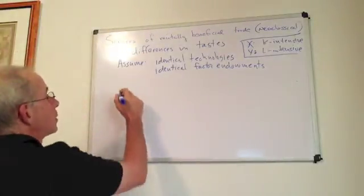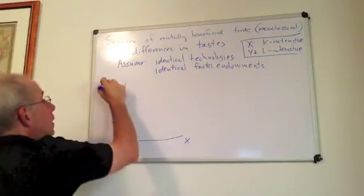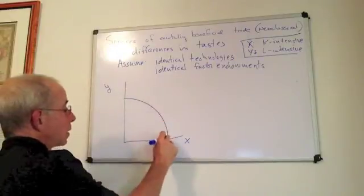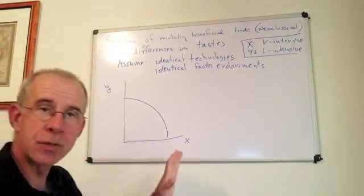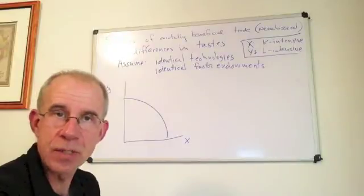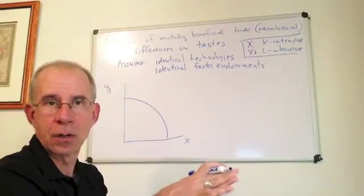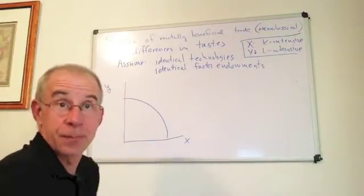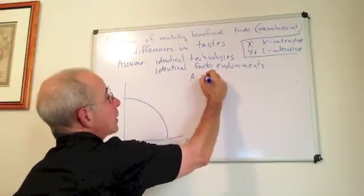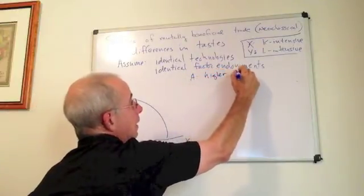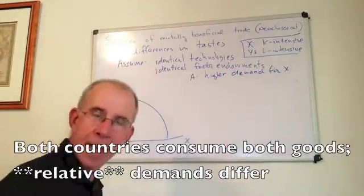So first of all, let's take a look at the production possibility frontier for these two countries. It's bowed out, neoclassical framework, and both countries share the same technologies, they share the same resources, so they both have the same PPF. So we're really just going to essentially put one PPF on top of the other. So on the supply side, if you will, they're exactly the same.